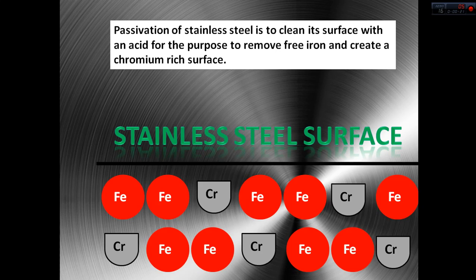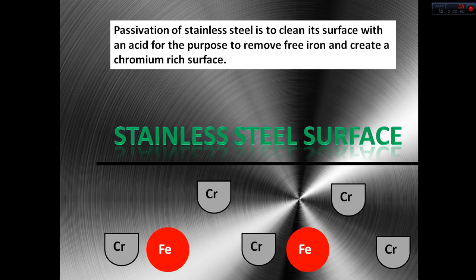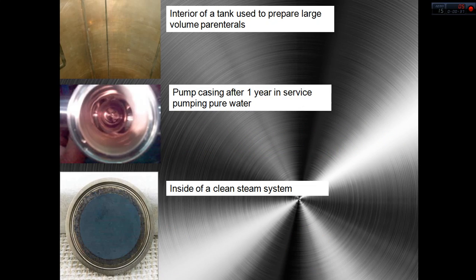Passivation means to clean the surface of stainless steel using an acid. When we clean it with an acid, we will remove the iron from that surface, and then the surface will become more rich in chromium and more corrosion resistant. There are many substances in the pharmaceutical industry that can corrode stainless steels.